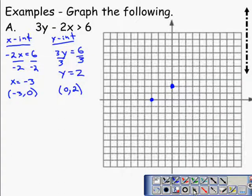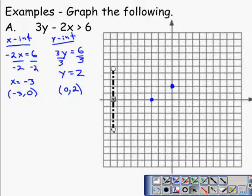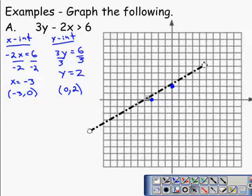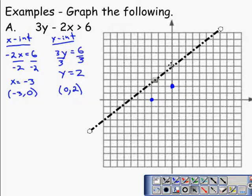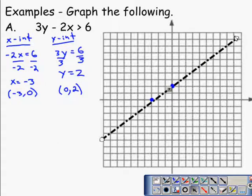Then we need to go ahead and drop in our line. Instead of using a solid line, we're going to use a dashed line, because there is no equal sign in the inequality that we're using today. And so I will go ahead and get a line in here. Again, it's a dashed line. That means that points on this line are not a part of the solution.